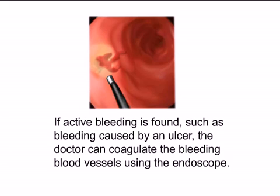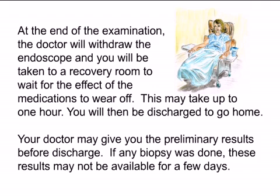If active bleeding is found, such as bleeding caused by an ulcer, the doctor can coagulate the bleeding blood vessels using the endoscope. At the end of the examination, the doctor will withdraw the endoscope, and you will be taken to a recovery room to wait for the effect of the medications to wear off. This may take up to one hour. You will then be discharged to go home.